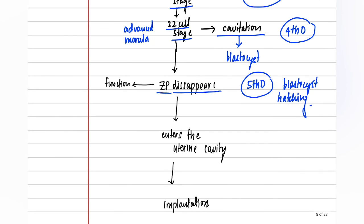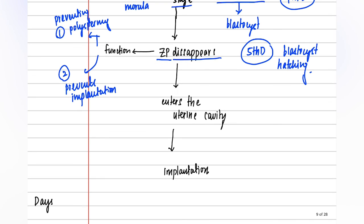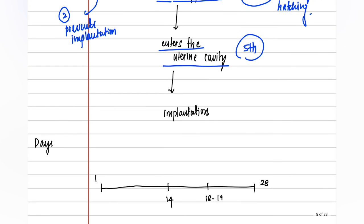After the blastocyst stage, the zona pellucida disappears around the fifth day — this process is known as blastocyst hatching. The zona pellucida serves two functions: first, preventing polyspermy; and second, in the context of implantation, it prevents premature implantation. Once the zona pellucida disappears on the fifth day, the blastocyst is free to implant.